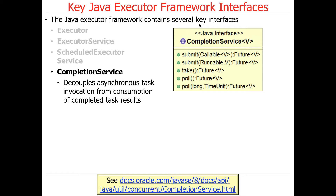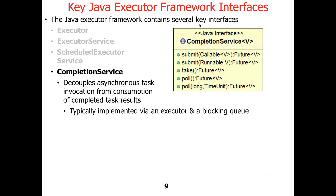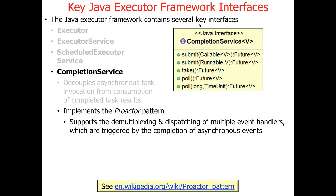Finally, there's an interface called CompletionService — arguably my favorite because it's really cool. It allows you to invoke operations that run asynchronously, and then as results finish, they are made available through an internal queue accessible via methods like take and poll. It gives you a very powerful way to get lots of things running in the background, and you can have one or more threads retrieving results as those things complete. It's arguably the most efficient and powerful mechanism for concurrent execution in the executor framework. Typically it's implemented via an executor you supply as a parameter, along with a blocking queue. The pattern it implements is called the proactor pattern, which allows you to run asynchronous events and get results back when they're finished.